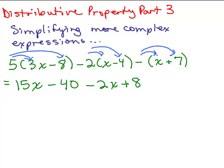And then we have minus — in parentheses — you just are going to change both things in the parentheses. Or you could think of it as minus times x, which is just a minus x, and a minus times a 7. Remember, you could think of that as a negative 1 times a 7. So if it helps you, you could always put in a negative 1 in front of there. So we have minus 7.